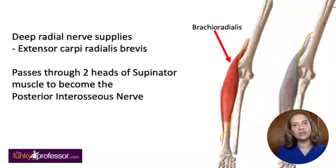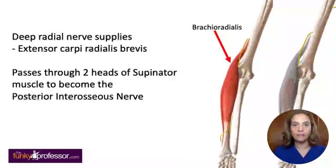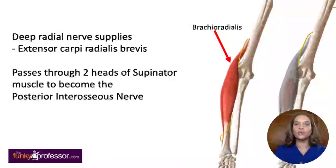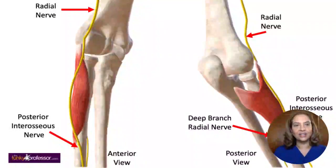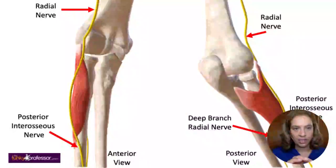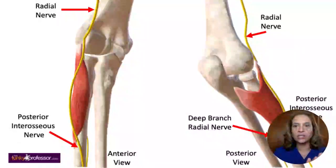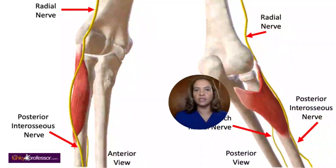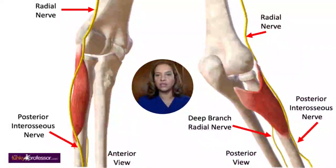The deep part of the radial nerve goes on to supply extensor carpi radialis brevis, and once it's done this the deep radial nerve passes through the two heads of the supinator muscle to become the posterior interosseous nerve. Here you can see the supinator muscle and how the radial nerve is closely related to it, then emerging as the posterior interosseous nerve.